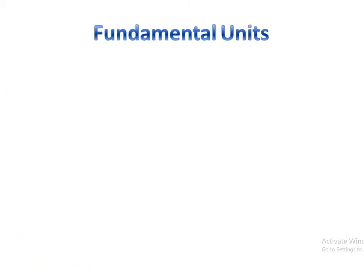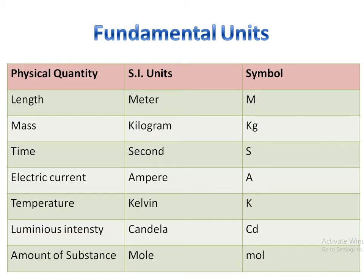Let's look at the table of fundamental units. The physical quantities are listed in column 1, SI units in column 2, and their symbols in column 3. Length is measured in meter (symbol: m), mass in kilogram (symbol: kg), time in second (symbol: s), electric current in ampere (symbol: A), temperature in kelvin (symbol: K), luminous intensity in candela (symbol: cd), and amount of substance in mole (symbol: mol).